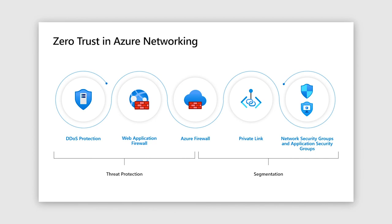Azure translates these principles into several solutions to build a zero trust approach network. DDoS protection, Azure WAF, and Azure Firewall all serve as threat protection resources — WAF at the application level and Firewall at the network level. Azure Firewall, Private Link, Network Security Groups, and Application Security Groups serve as segmentation resources. These components integrate well with each other and create the cohesive zero trust network approach that organizations need.